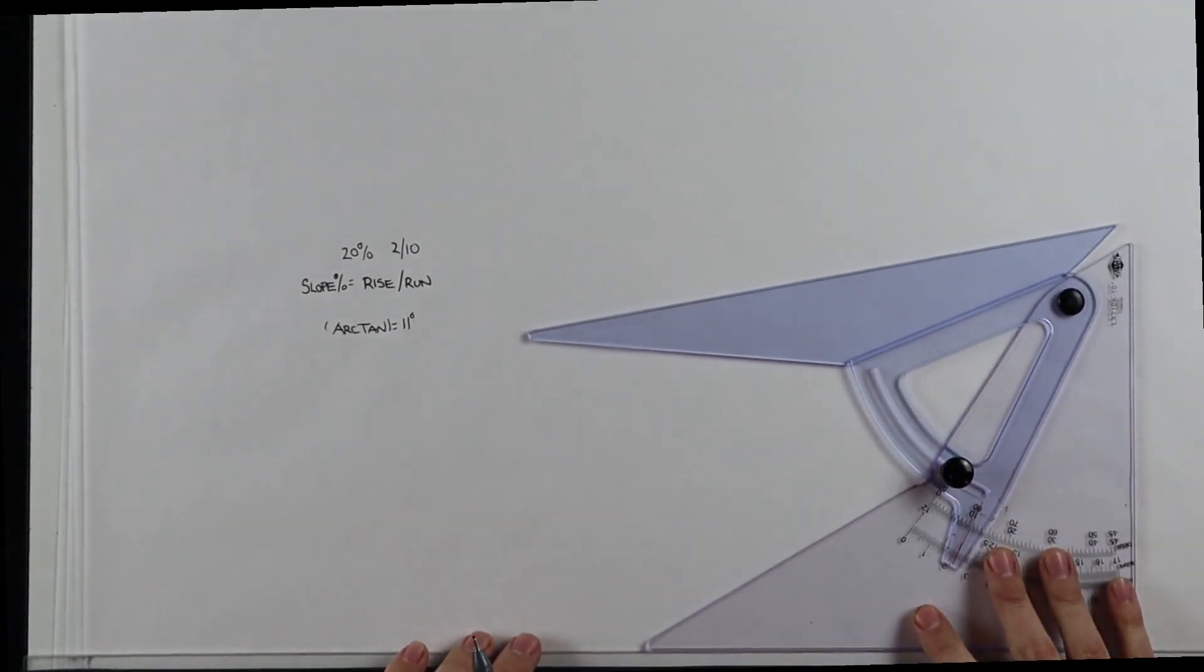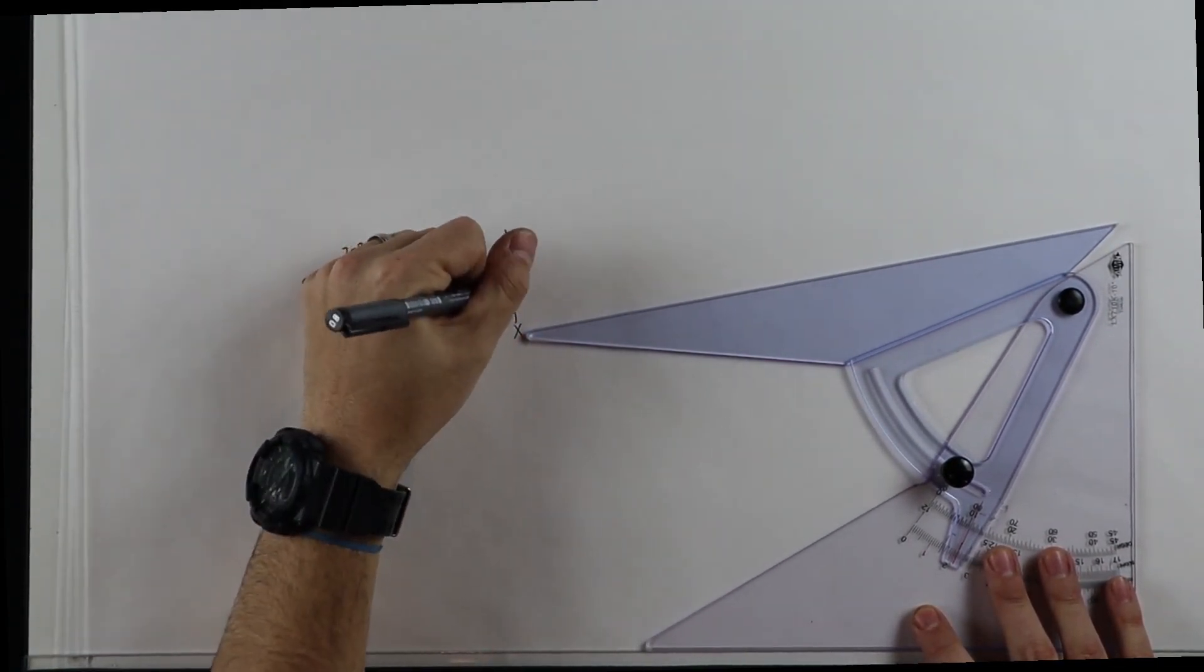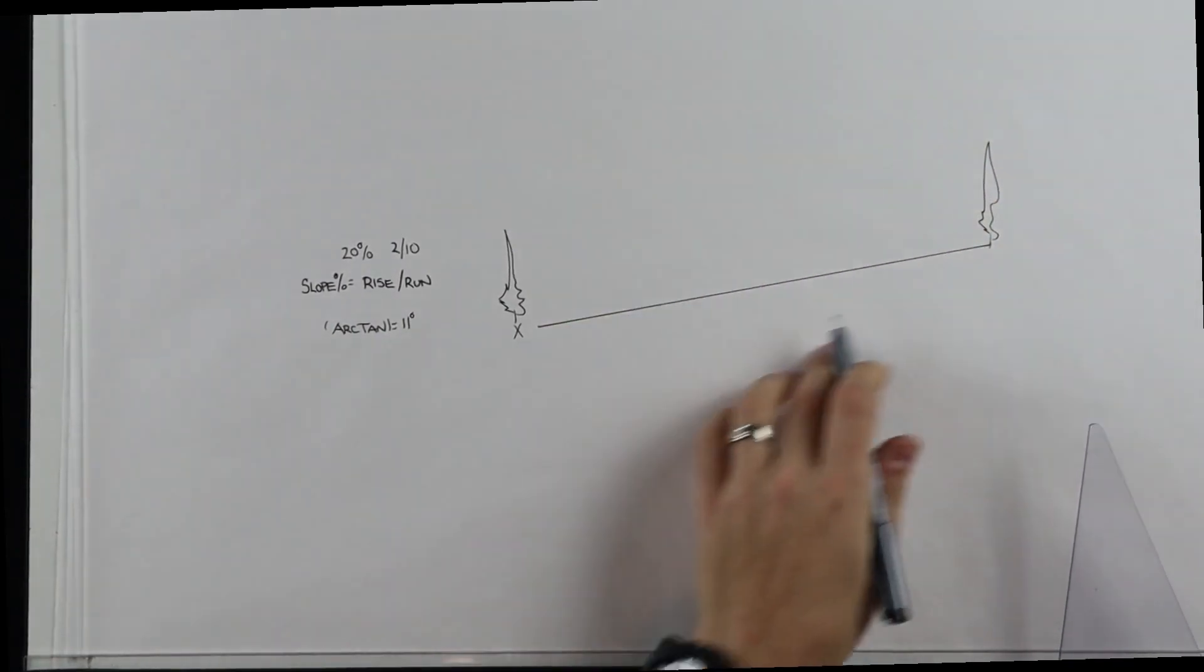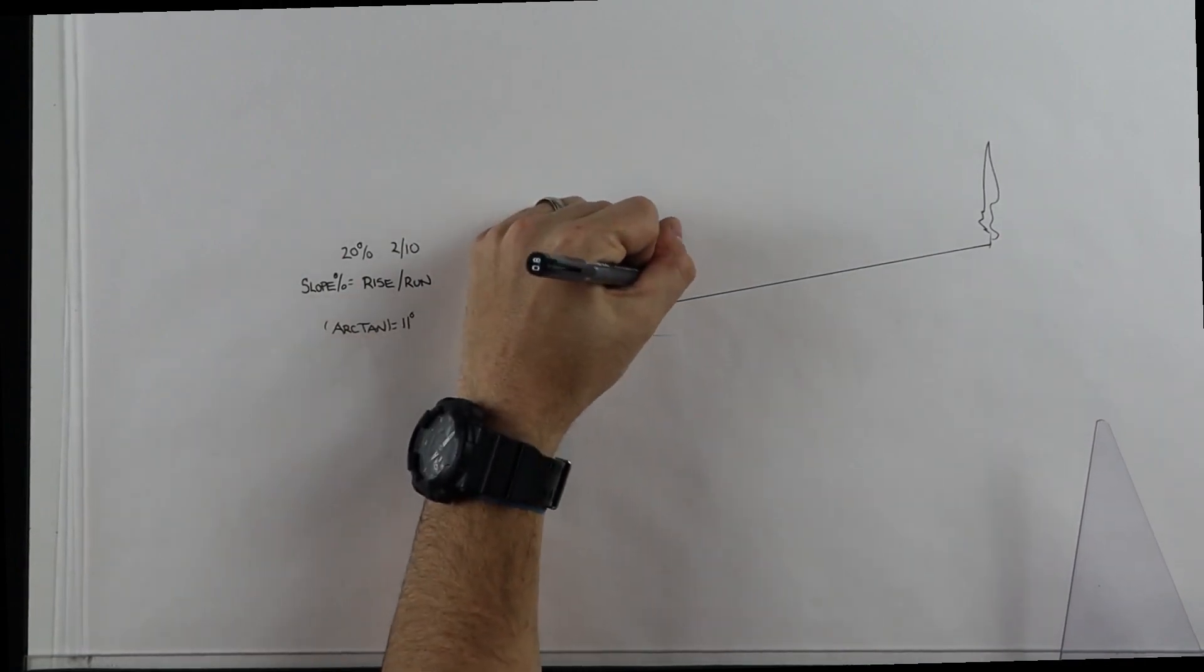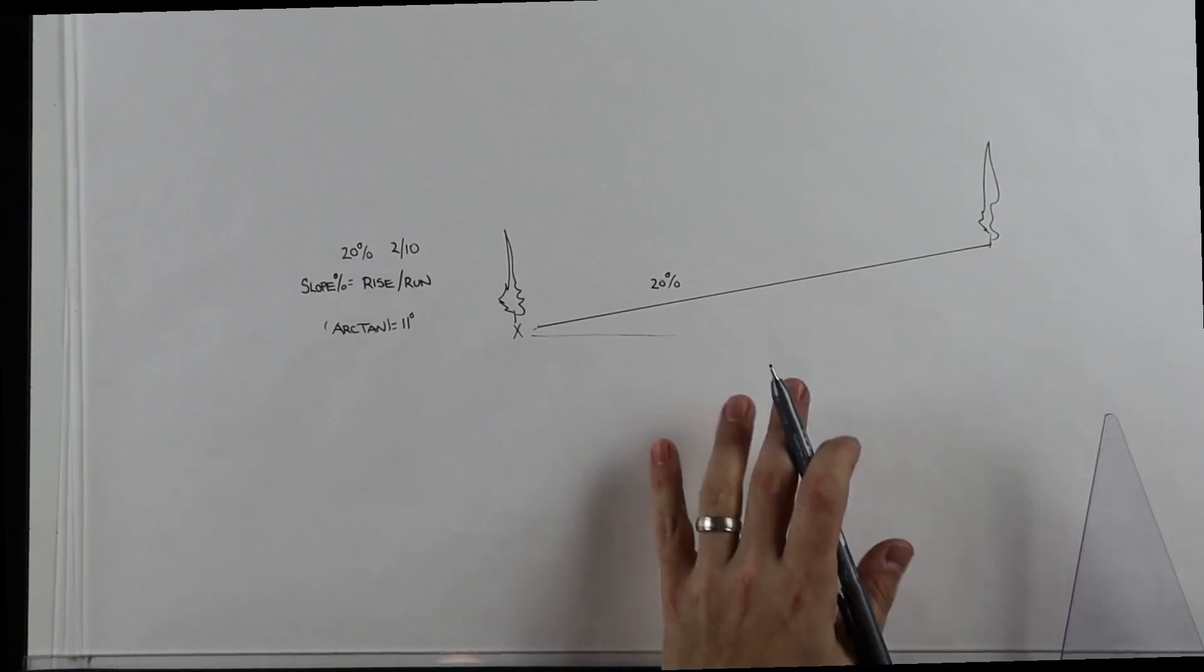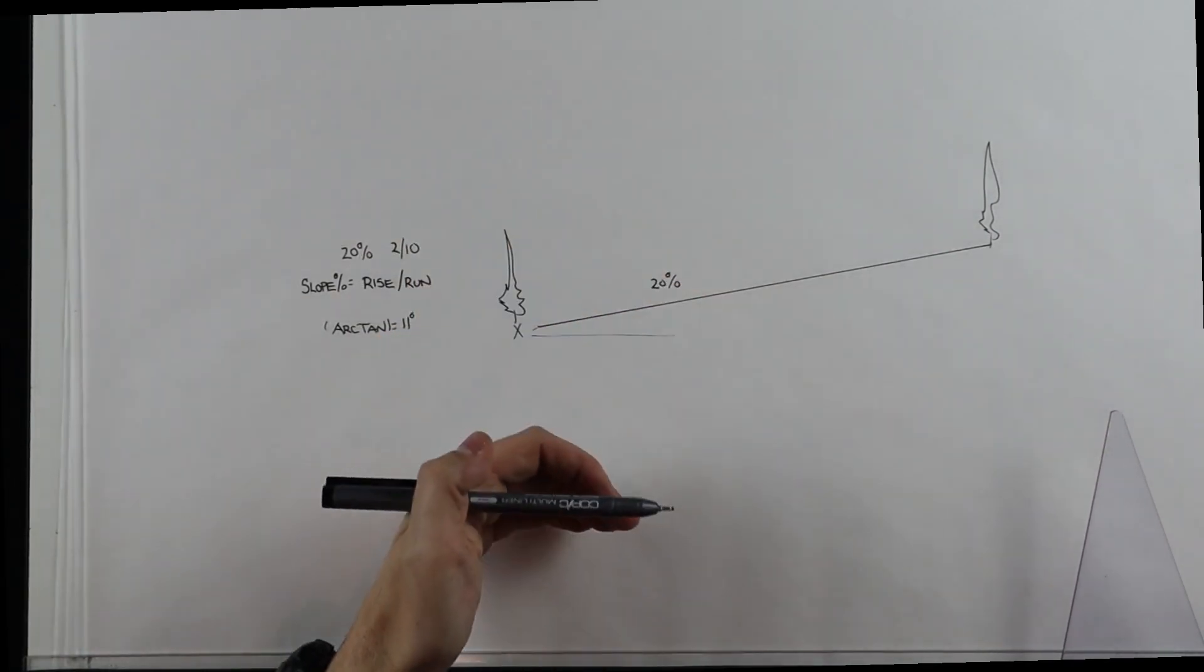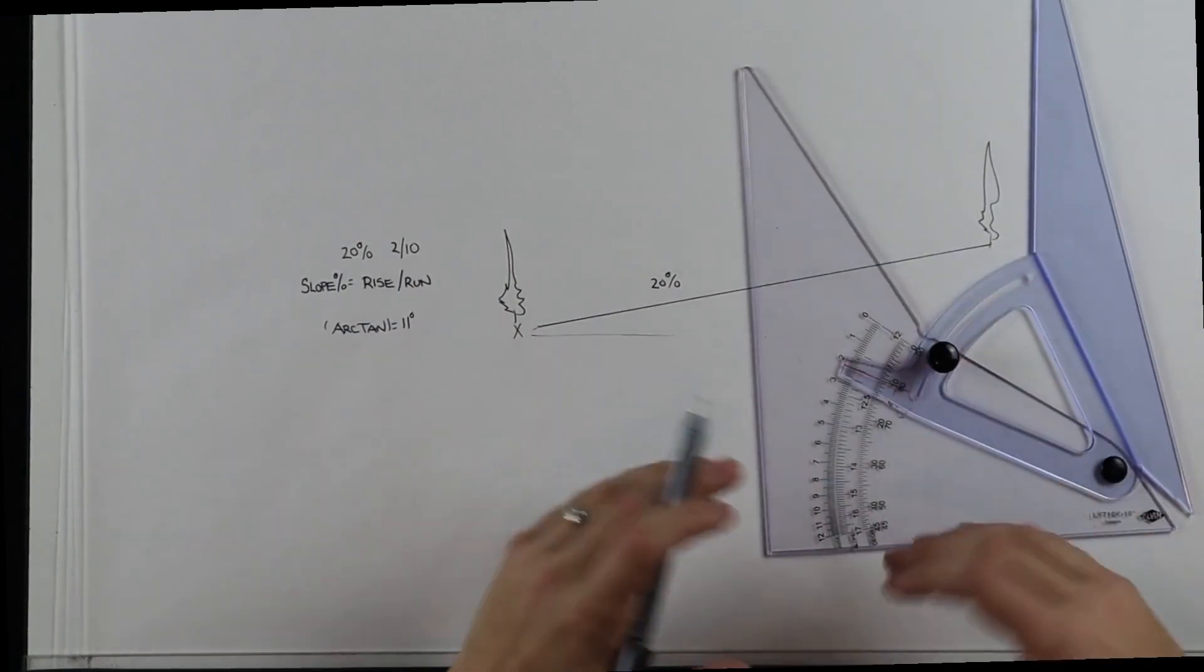And so now if I look at my slope, I have the bottom of my slope here, maybe there's a little tree there, and then the top of my slope would be somewhere over here, put another tree there, and now I know that that eleven degree angle is going to show me a slope of twenty percent. So that's a very easy and quick way to draw very good accurate sections without having to consistently measure on your scale rise and run, just simply using the trigonometric function on your calculator in addition to this adjustable triangle.